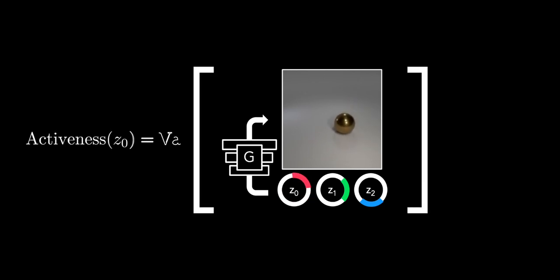Intuitively, we'd like to rank the z-components based on how much they control G. A simple way to do this is to just take a per-pixel variance of G's output as we change one z-component and leave the others fixed. We can then average the results over all of the pixels and do this over several samples. We call this the activeness of a component.